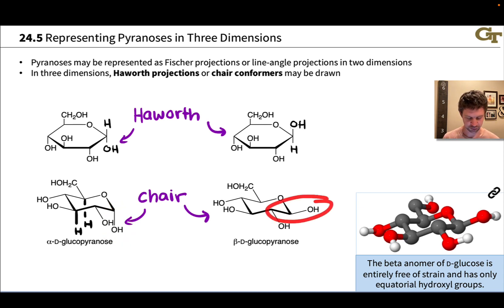The equatorial hydroxyl group in the beta anomer makes it more stable than the axial hydroxyl group in the alpha anomer, which is engaging in destabilizing 1,3-diaxial interactions with the other axial hydrogens. So fundamental organic chemistry at work there—the axial OH group is less stable than the equatorial OH group in the beta anomer.